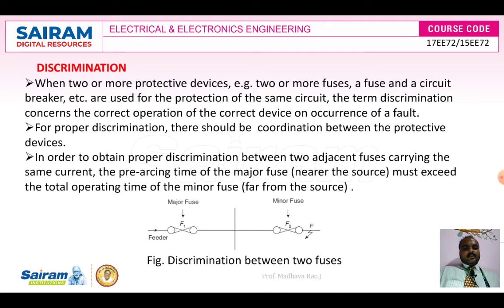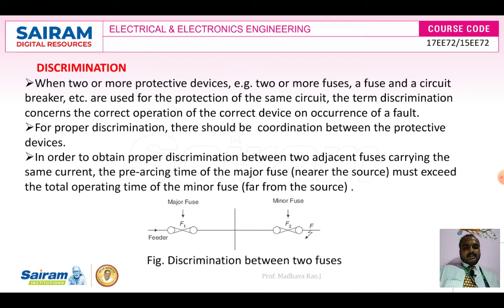When two or more protective devices — for example, two fuses, or one fuse and one circuit breaker — are used in transmission lines, discrimination means the correct device operates on occurrence of a fault. The other device should act as a backup. For proper discrimination, there should be coordination between the protective devices, so when one device does not operate, the other is used to protect the system.